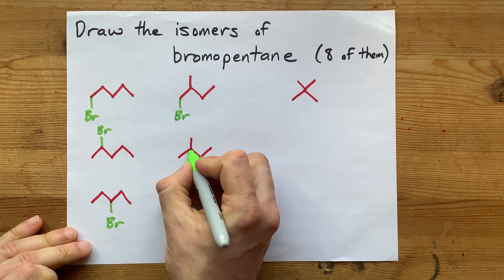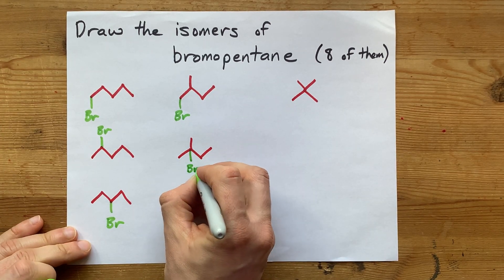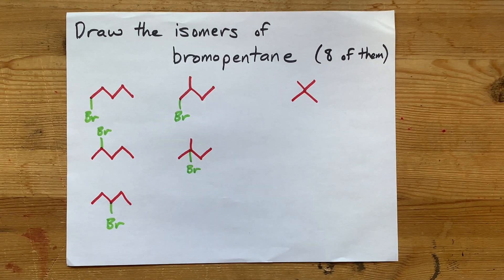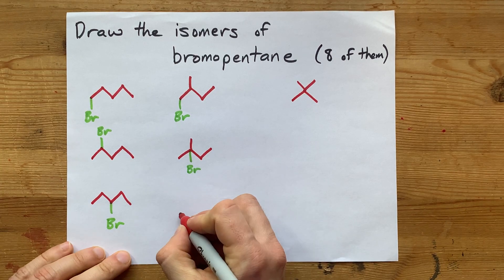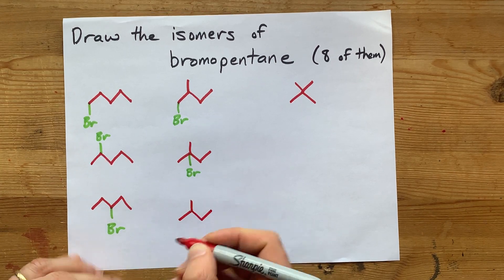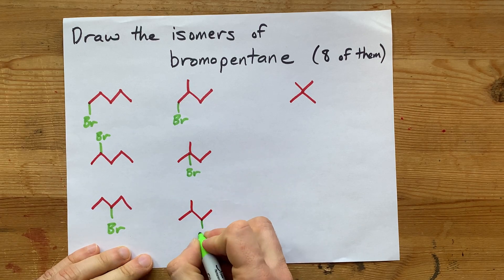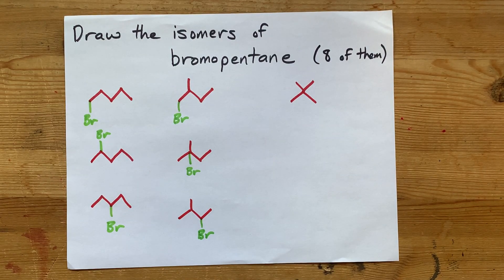Could I put bromine on this atom? Yes, there is room for it. And that is definitely different, a different place to connect it than there. Could I put the bromine on the next carbon over? Well, yes, that's also a possibility. And it's also different from any of the others.